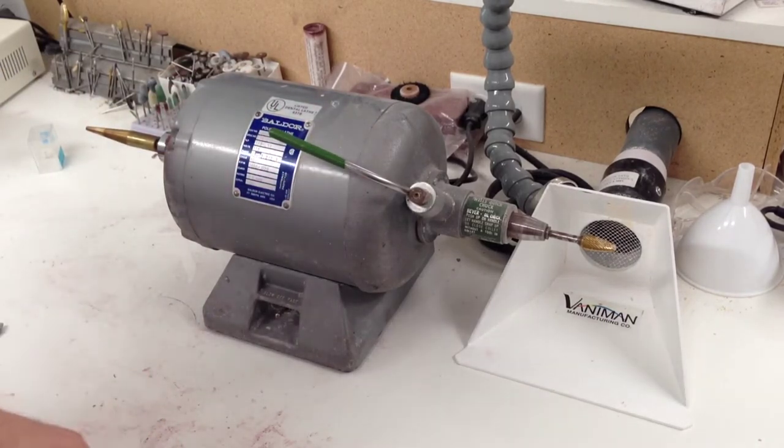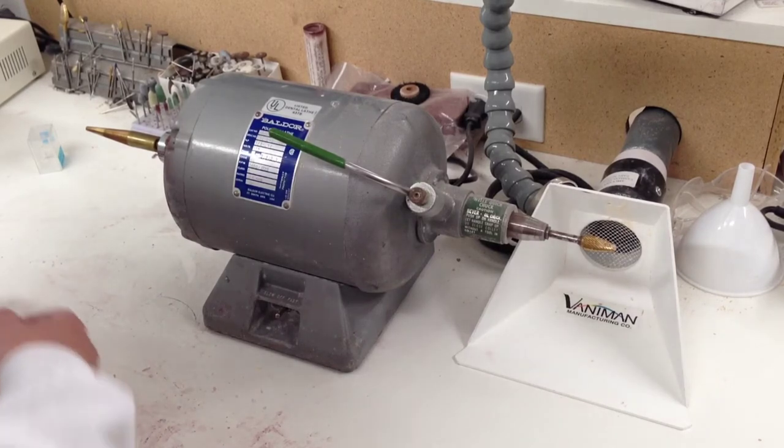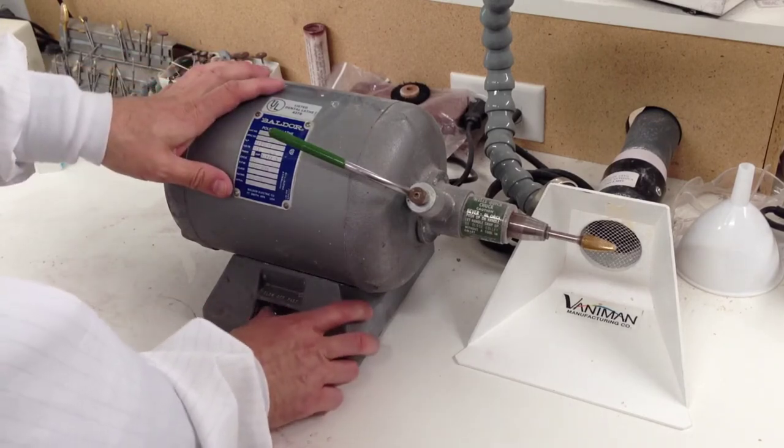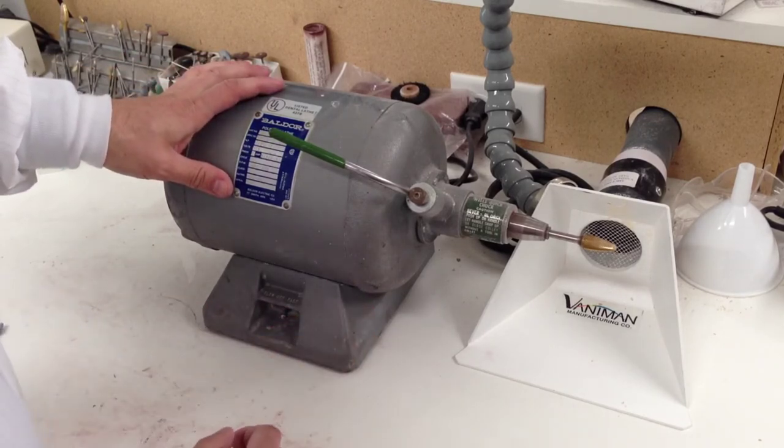The purpose of the quick chuck is to allow you to work faster without having to stop the lathe when changing burrs. You have your slow and fast settings.